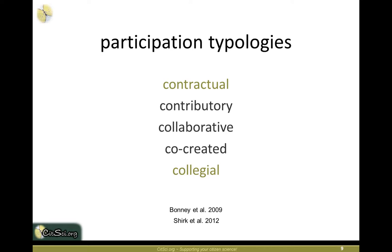A separate typology published in 2012 by Jennifer Shirk and others, echoing Rick Bonney's 2009 publication, described citizen science as contributory, collaborative, and co-created — with contractual and collegial projects on the margins. Contributory projects are top-down, where scientists determine research questions and the community's role centers on contributing data collection efforts. Collaborative is more in the middle, and co-created represents the bottom-up grassroots approach.